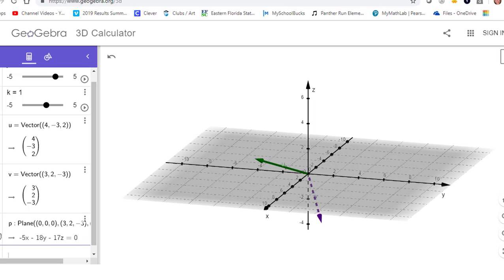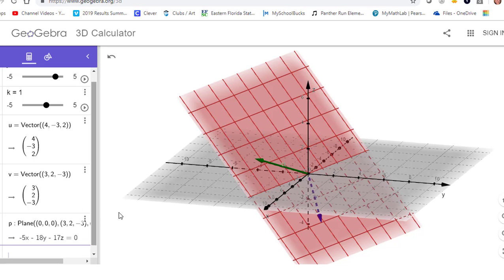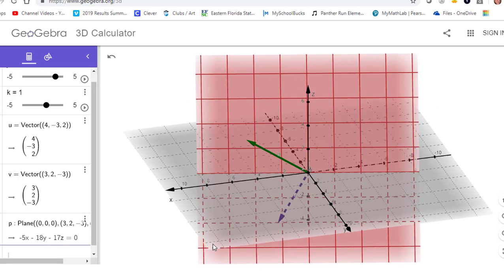So, what I'm going to do is I'm going to impose the plane that cuts through or is formed by those two vectors in pink here, and I'm just going to rotate it where we can see that plane.